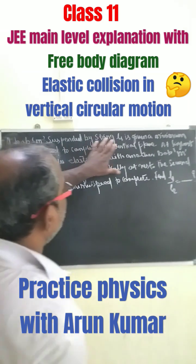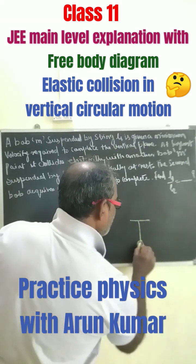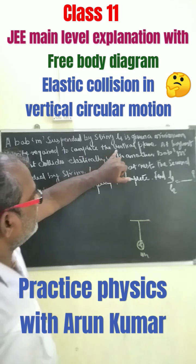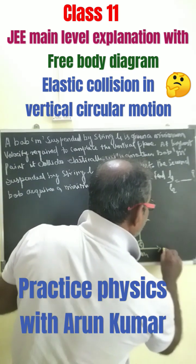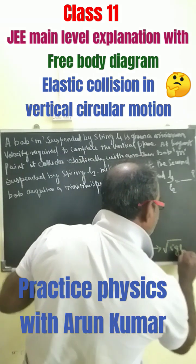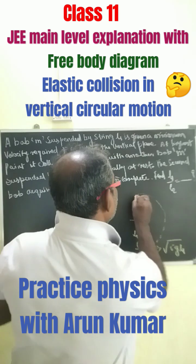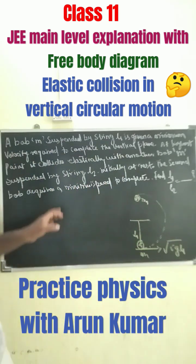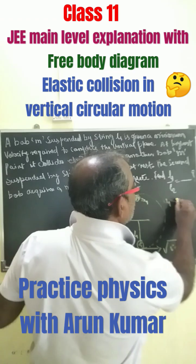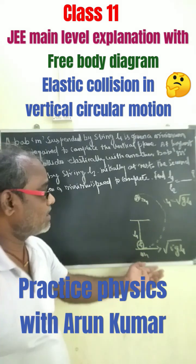A bob of mass m is suspended by a string of length l1. It is given the minimum velocity required to complete a vertical circle, which is √(5gl1). At the highest point of the circle, the velocity becomes √(gl1), since just sufficient energy was provided to reach the top.